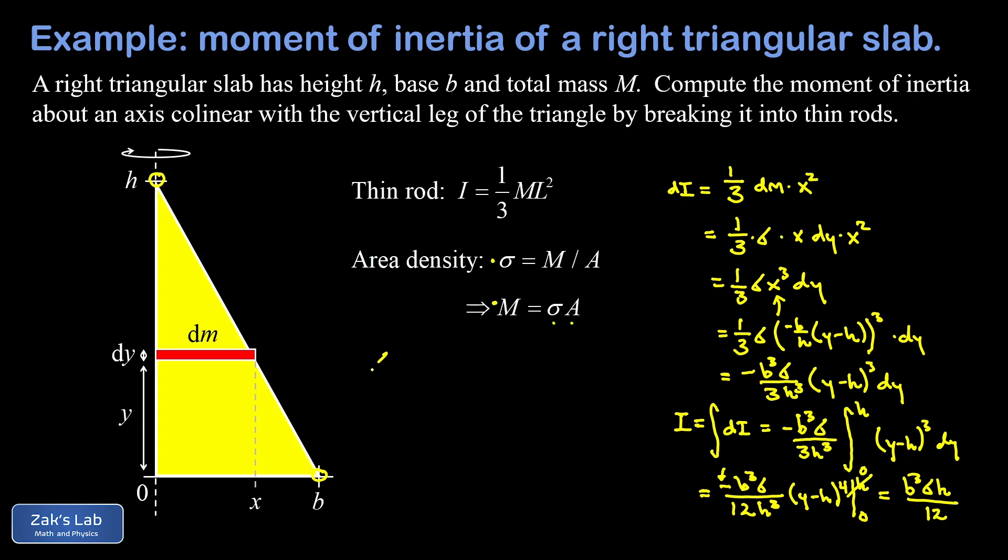We go back to our definition of area density, and that's the total mass of this triangle divided by the area of the triangle, which is one half base times height. A nicer way to write that is 2M over bh.